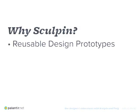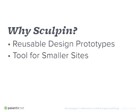The first reason we chose Sculpin was we wanted to have reusable design prototypes. At Palantir, as designers, we start in Photoshop or Illustrator, but then we move into the browser so we can show responsive design and communicate better with our back-end developers. We knew D8 was coming and that it's using Twig. So we wanted to find something that would allow us to integrate Twig into our process earlier so we could have more recyclable prototypes that will be easier to integrate into the final site. We're also looking for a tool for smaller sites, since at Palantir we do a lot of big sites, and we'd like to take in some extra smaller projects to fill in some gaps.